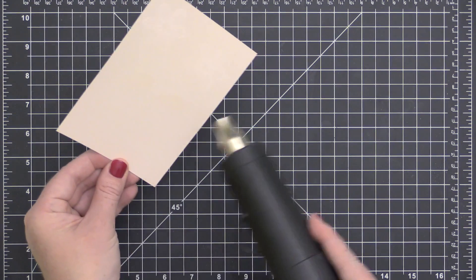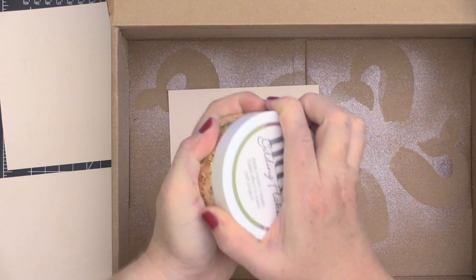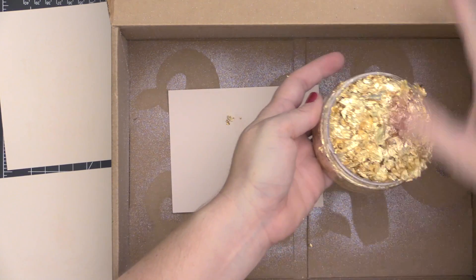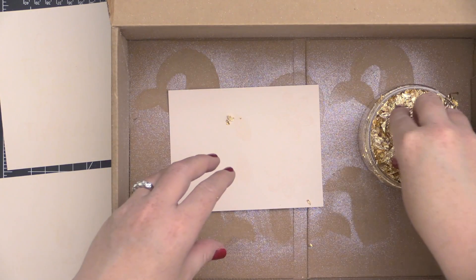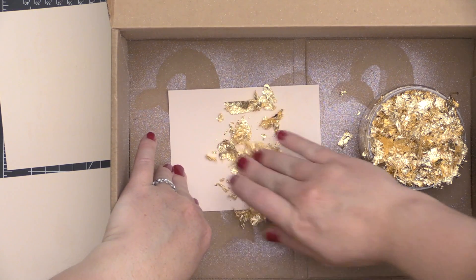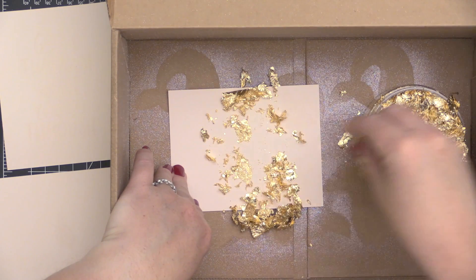I'm going to take it over to the embossing powder and melt it just until it's shiny. This embossing powder melts much quicker than other embossing powders, and you don't want to overheat it or it will lose its stick. Sometimes it takes a little bit of getting used to if you're used to traditional embossing powders.